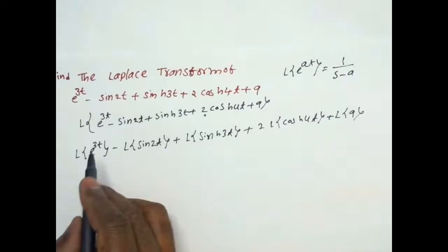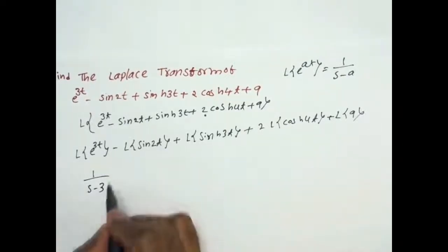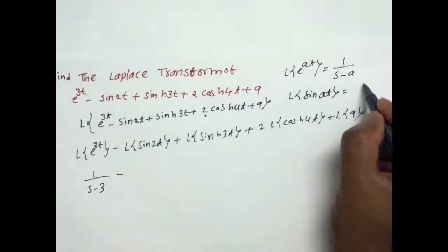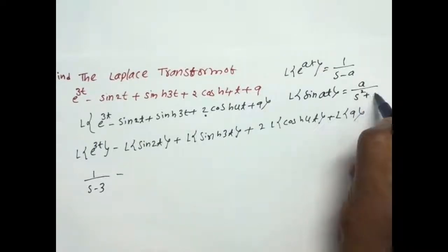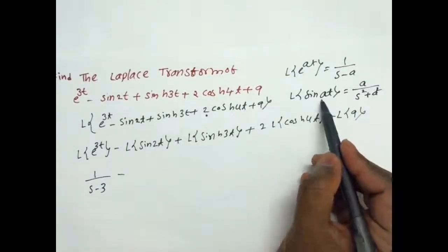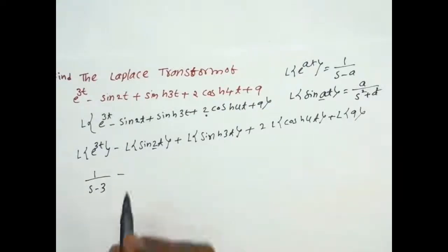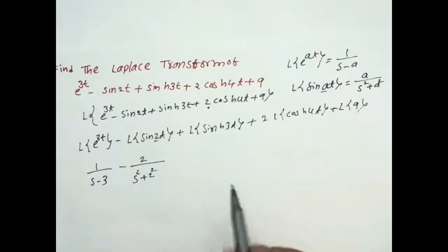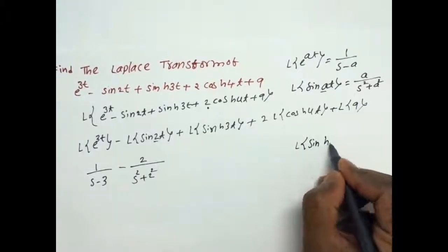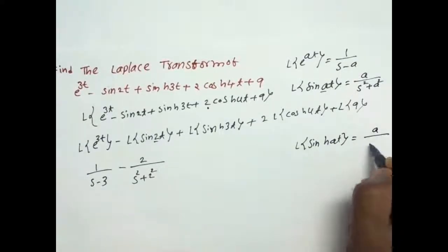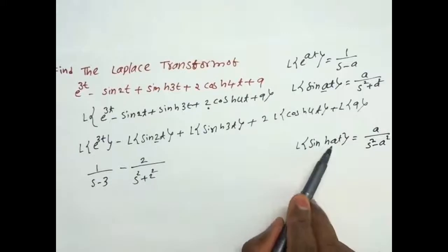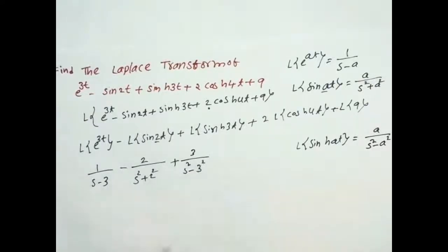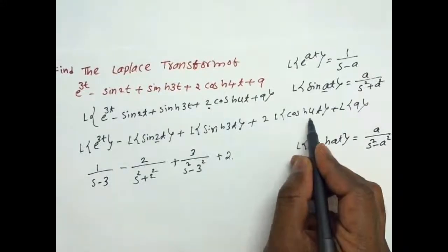Next, the Laplace of sinh(at) has the formula a/(s² minus a²). Comparing with sinh(3t), we substitute a equals 3, giving us 3/(s² minus 9).